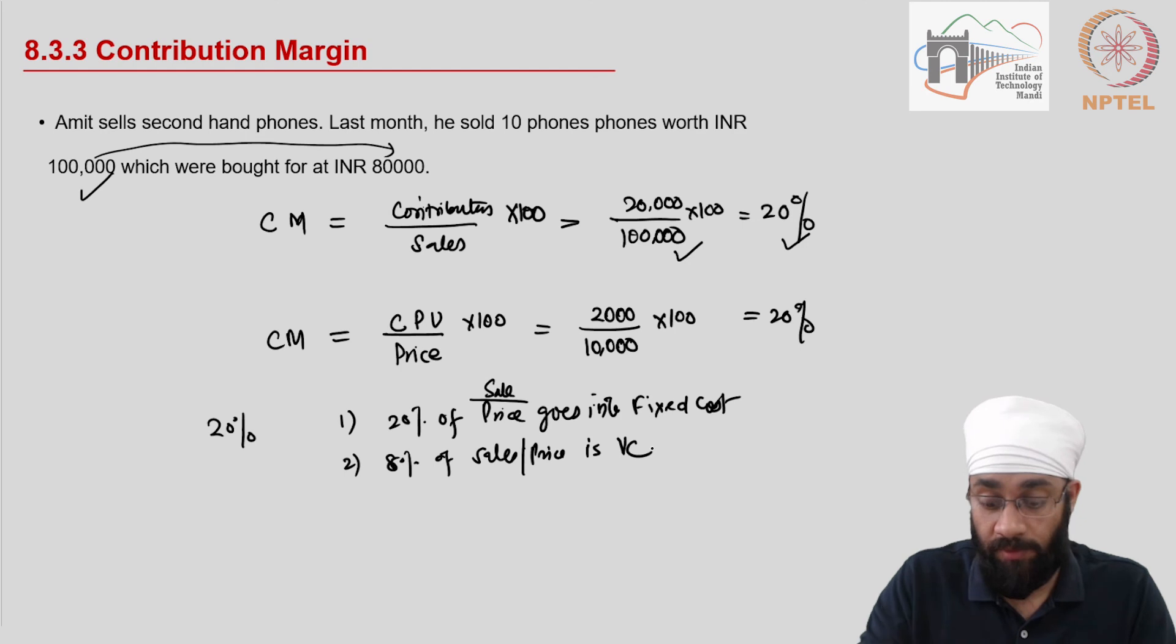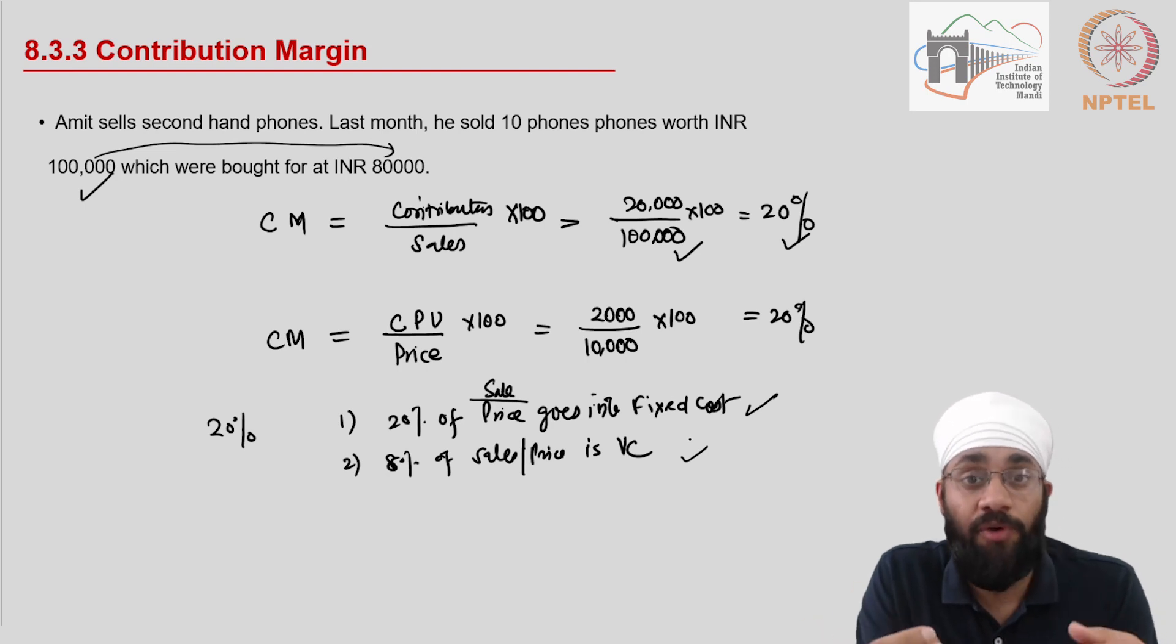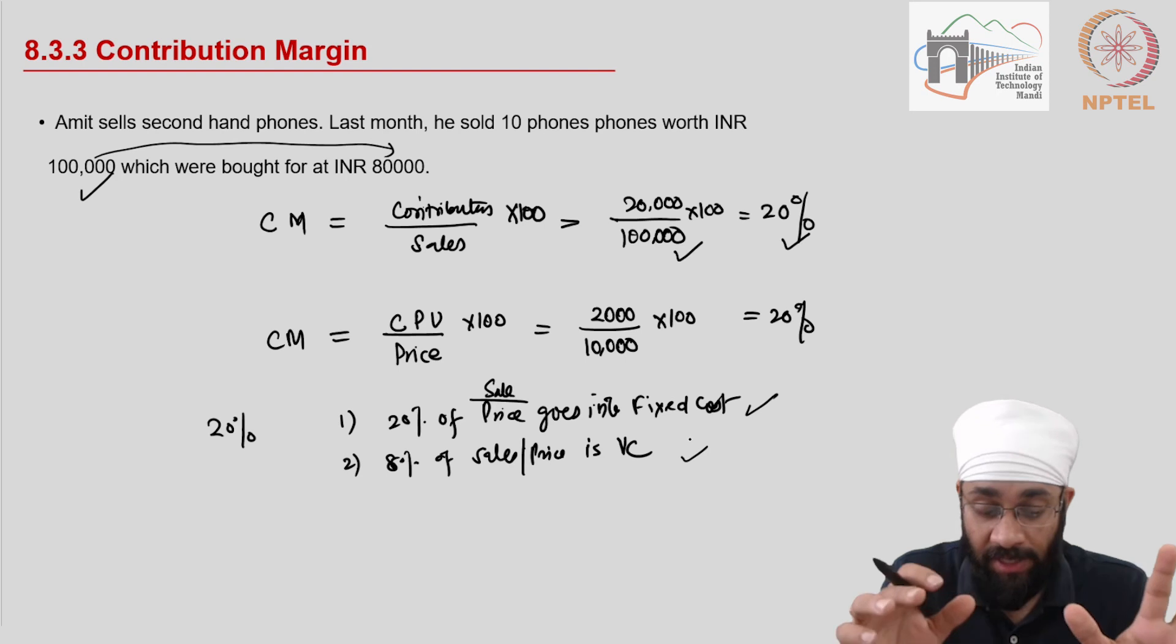This is the two sides of the same point - you could say this or say this. So earlier when we used to discuss the gross margin, we used to say the cost of the goods taken out from the revenue, that is the gross margin. And now that margin is available for you to cover the selling and administrative expenses. Now we are looking at it differently. We are saying, first of all, variable costs have been covered. Now this 20% is available to us to cover the remaining fixed cost. This is how we are going to use the contribution margin.